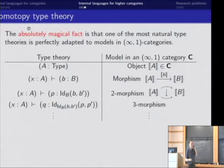So the absolutely magical fact, which is the thing which has brought all of us together here to work for the special year, is that one of the most natural type theories, the intensional type theory originally defined by Martin-Löf, is actually naturally, perfectly adapted to describe models in these higher categories.